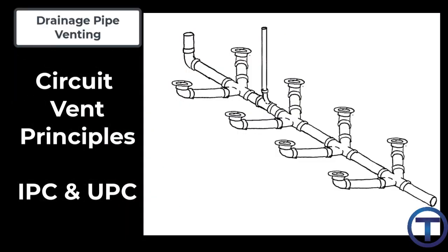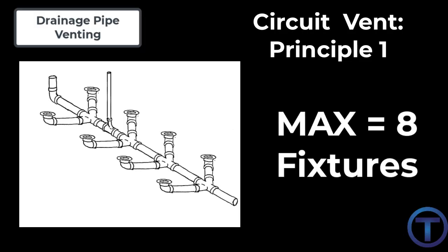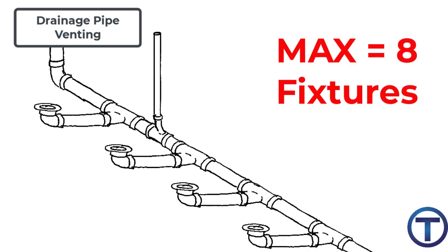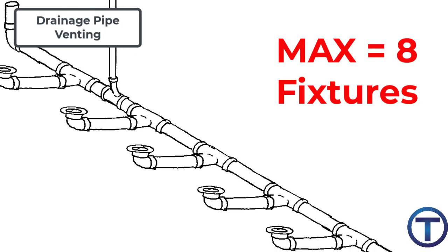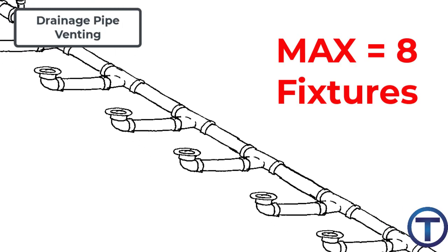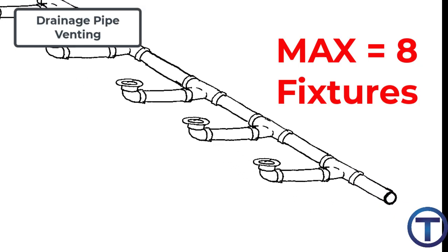Before looking at specific examples, let's quickly review the circuit vent principles that we find in both the Uniform Plumbing Code and the International Plumbing Code. First, circuit vent principle one: no more than eight fixtures can be connected to a horizontal branch on a circuit vent. So eight fixtures is the max.